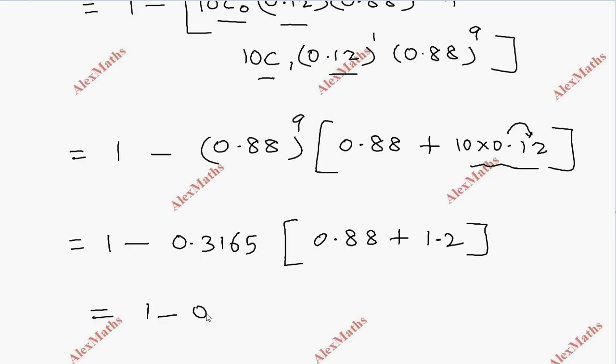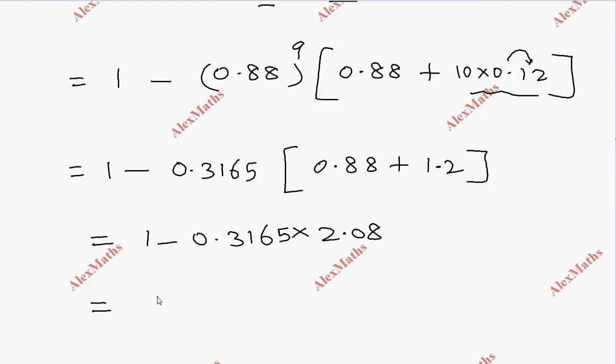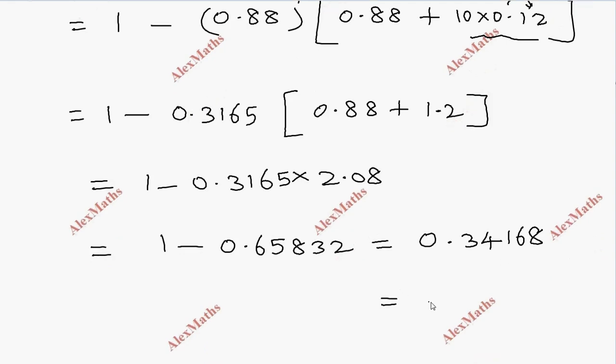1 minus 0.3165 into 2.08. So 1 minus 0.65832. This is 1 minus 0.3417.